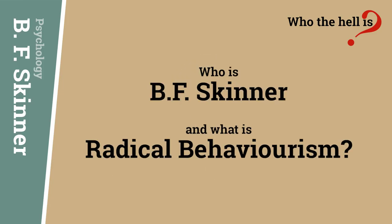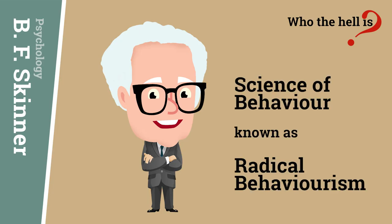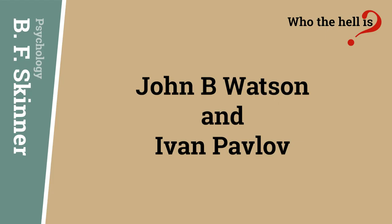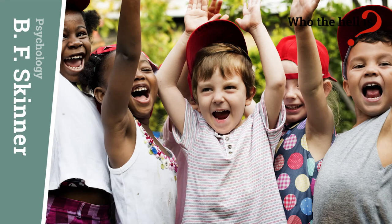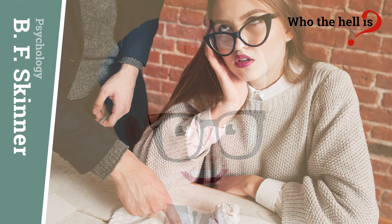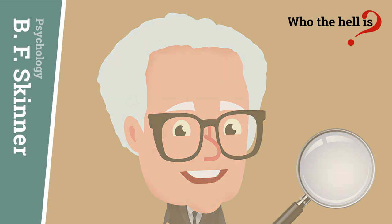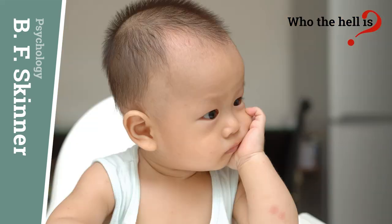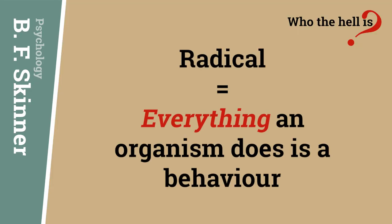Who is B.F. Skinner and what is Radical Behaviourism? B.F. Skinner was an American psychologist and behaviourist who invented the philosophy of the science of behaviour, known as Radical Behaviourism. Skinner's philosophy wasn't so different from previous forms of behaviourism as put forward by John B. Watson and Ivan Pavlov. They all agreed that the environment plays a far greater role in moulding human behaviour than had previously been suggested, and that experiments should focus on observable external actions. But Skinner's Radical Behaviourism redefined behaviour to include everything that an organism does, including thinking, feeling and speaking — that is what Skinner meant by the term radical.